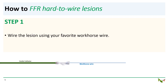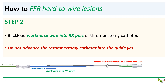So this is how it's done. Step one: wire the lesion using your favorite workhorse wire. Step two: once you've crossed the lesion with your workhorse wire, you backload the back end of the wire into the RX port of your thrombectomy catheter. Leave the thrombectomy catheter on the table for now and do not advance it into the guide yet.